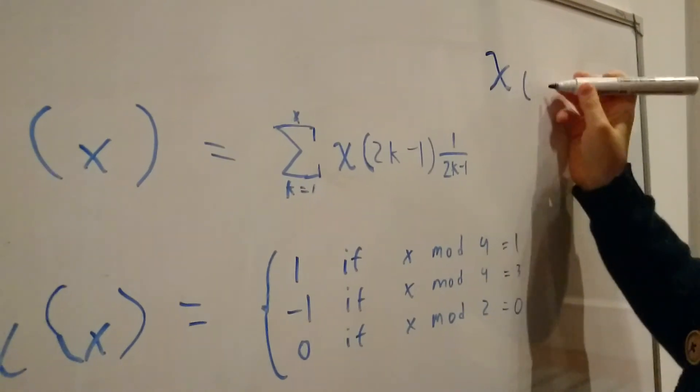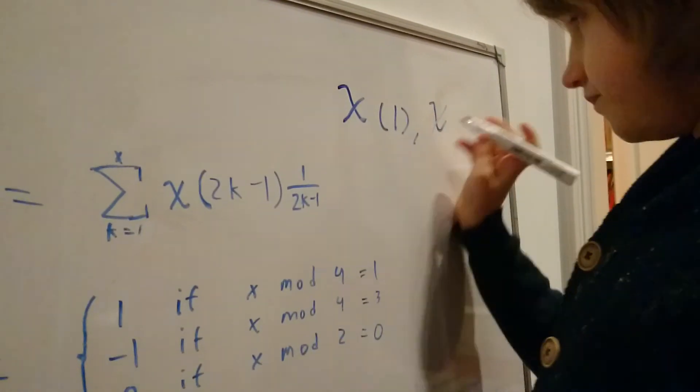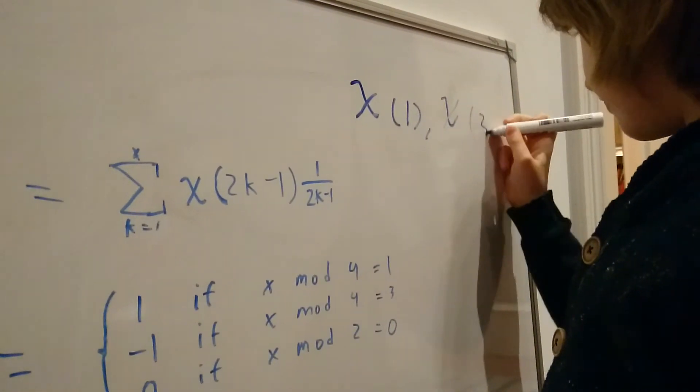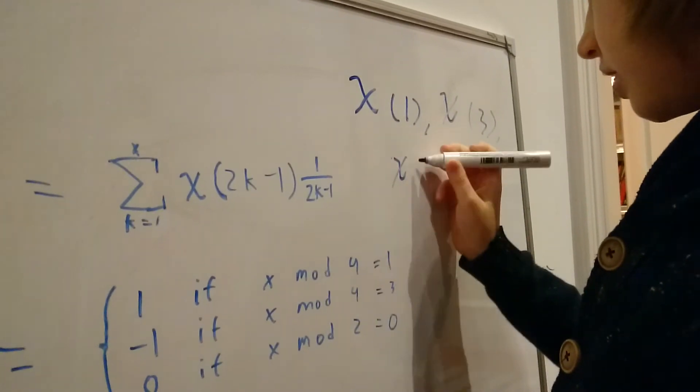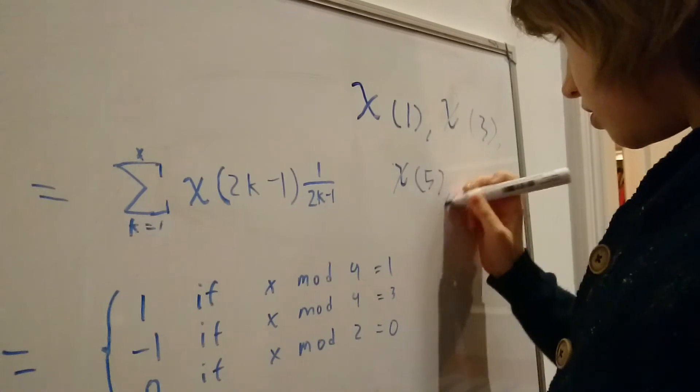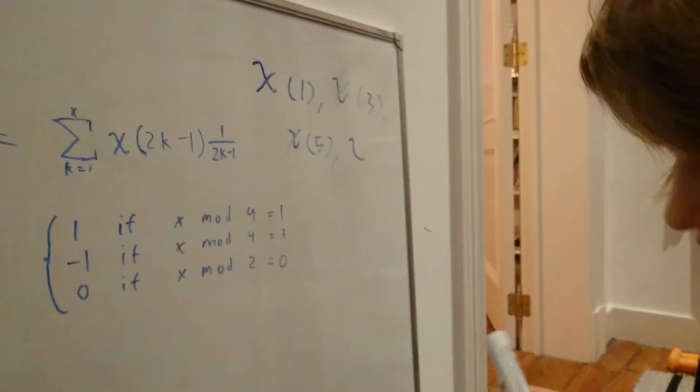We do chi of 1, chi of 3, chi of 5. So this is usually just chi of every odd number.